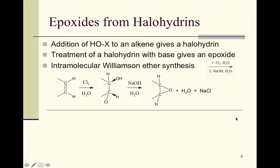Another way to make epoxides is from halohydrins — addition of OH and X to an alkene gives a halohydrin. Treatment of a halohydrin with base then gives an epoxide; this is known as an intramolecular Williamson ether synthesis. In step 1, Cl₂ and water add across the double bond to give chlorine and an OH group. In step 2, sodium hydroxide and water cause the chlorine to leave and the oxygen becomes the epoxide ring, with NaCl and water as minor secondary products.